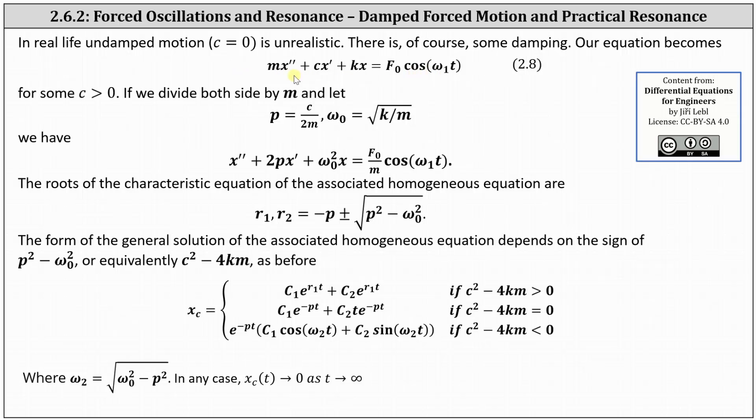If we take this equation and divide both sides by M and let P equal C divided by two M and omega sub zero equal the square root of K divided by M,